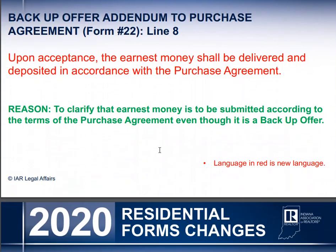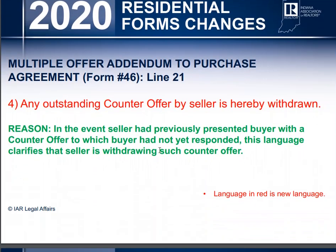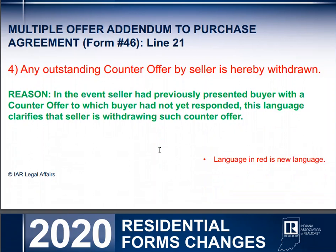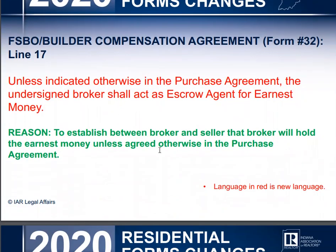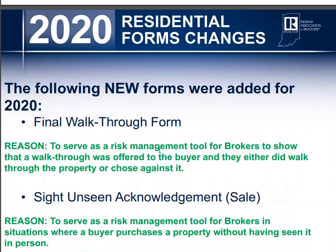Clarify earnest money submitted on the terms of the purchase, even though it's backup — that's what I was just talking about. Even though you're the first right or a backup, you still have to submit your earnest money. Multiple offer change addendum. FISBO compensation change — if you're dealing with either the builder or the FISBO, it's to establish the relationship between the broker and the seller, who's going to hold the earnest money and where it's going to be.